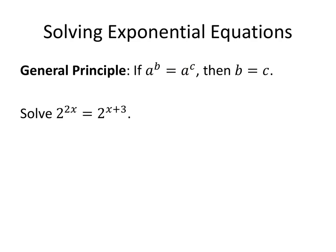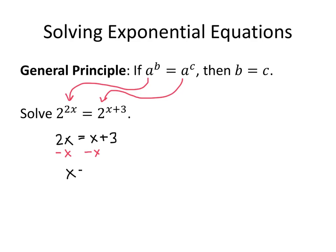Let's look at an example. If we wanted to solve the equation 2 to the 2x equals 2 to the x plus 3, this is exactly the situation we're talking about. We have a to the b equals a to the c, and the a's are the same — 2 in this case. So the exponents have to be equal, and we can just get rid of the 2's. We just have the equation 2x equals x plus 3. Let's subtract x from both sides, and we get x equals 3.